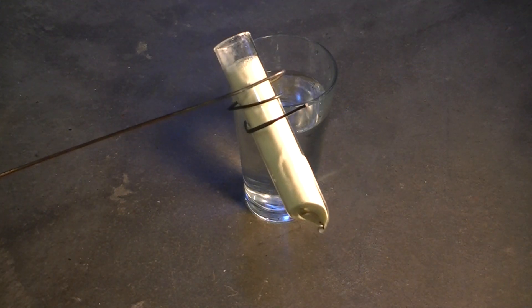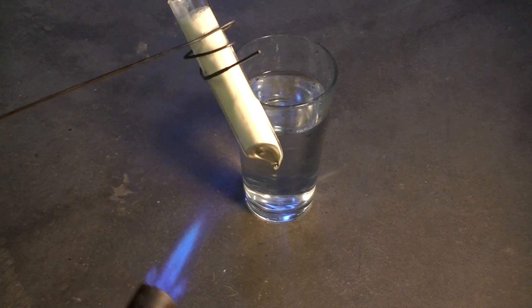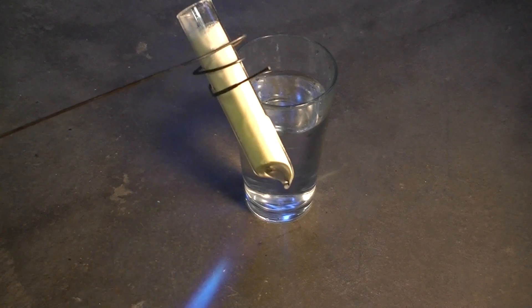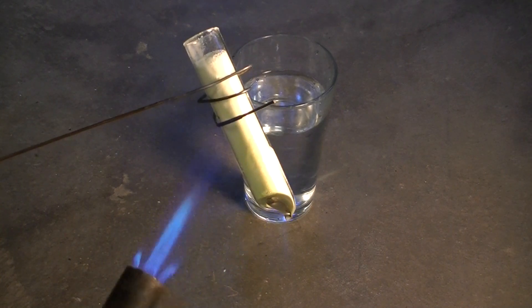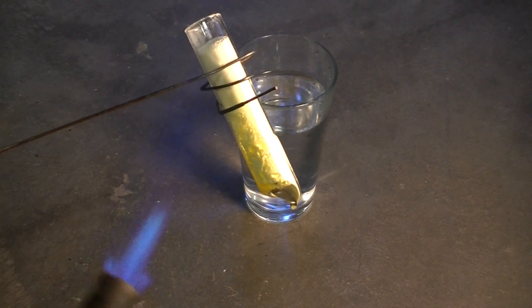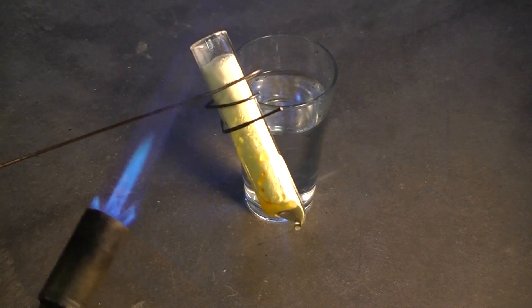In our third and final demonstration, we are going to show a unique property of elemental sulfur to form plastic sulfur. As you can see we have a large quantity of sulfur that we are heating in a test tube. Whilst this is heating, we need to discuss some of the allotropes of sulfur.